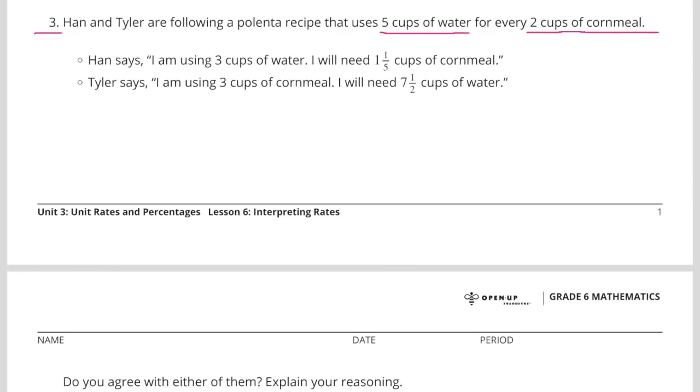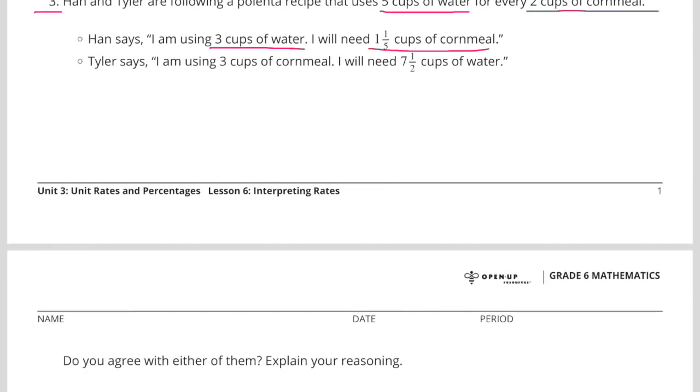Number 3. Han and Tyler are following a polenta recipe that uses 5 cups of water for every 2 cups of cornmeal. Han says, I'm using 3 cups of water. I will need 1 and 1 fifth cups of cornmeal. Tyler says, I'm using 3 cups of cornmeal. I will need 7 and 1 half cups of water. Do you agree with either of them? Explain your reasoning.